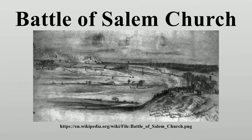After dark, Sedgwick sent Hooker a message recommending that the Sixth Corps retreat across the river. After Hooker sent his approval at 1 a.m., Sedgwick withdrew across two pontoon bridges at Banks Ford, completing the retreat about 4 a.m. Hearing that Sedgwick had been repulsed, Hooker abandoned the entire campaign, recrossing the main body of the Union Army on the night of May 5 into May 6 to the north bank of the Rappahannock River, back towards the federal camp at Falmouth.